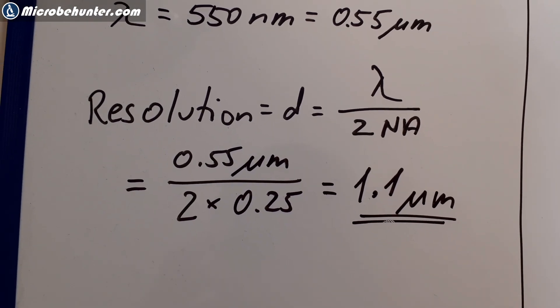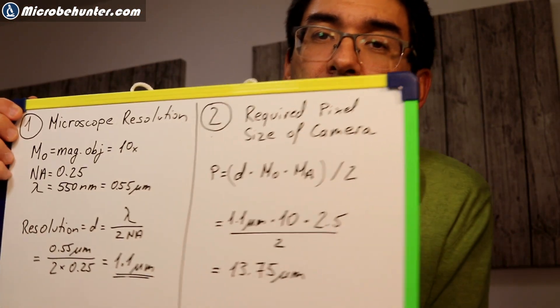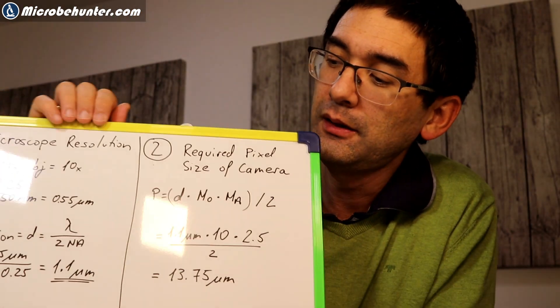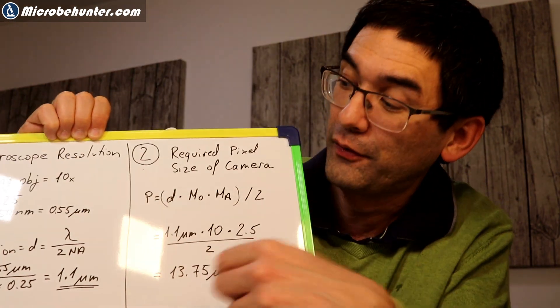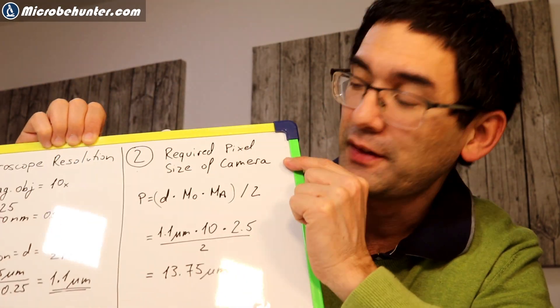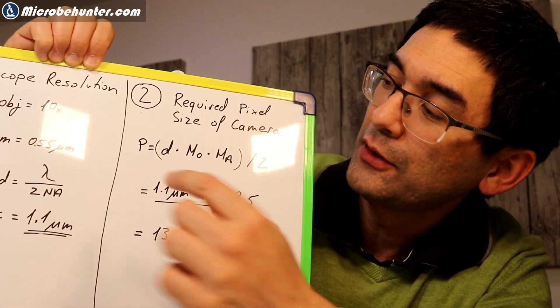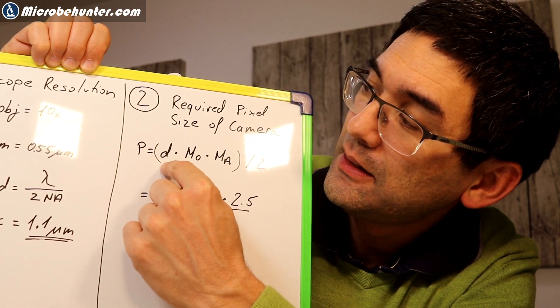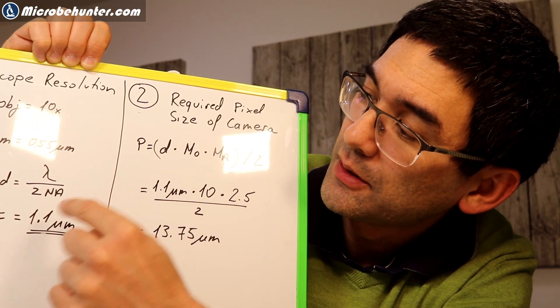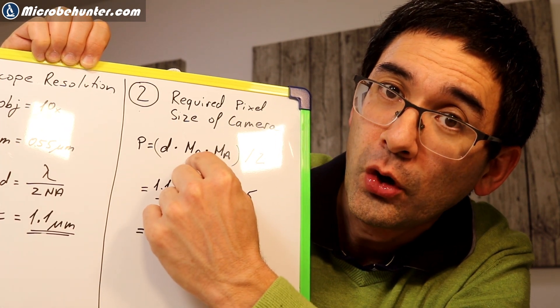So and now I'm going to calculate the required pixel size of the camera. I'm going to move over here to the other side here. And then later in the back, I continue, and we're going to combine both of them. So the required pixel size of the camera, let me put this up here a little bit, is now determined by this following formula. Here, D, that is the resolution. It's this value over here. Mo, that's the magnification of the objective. We know that. That's easy. That's the 10 times.